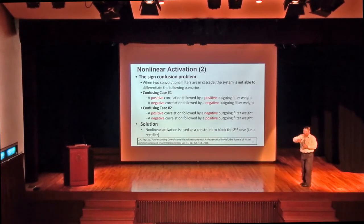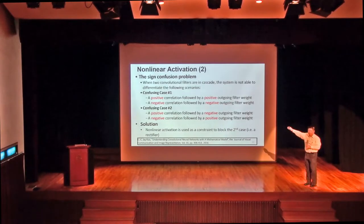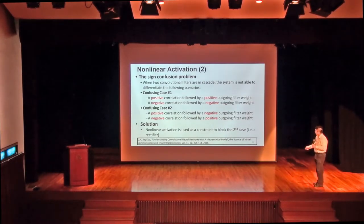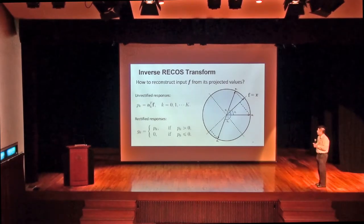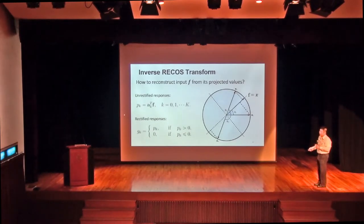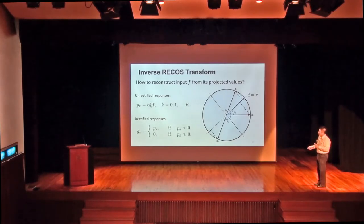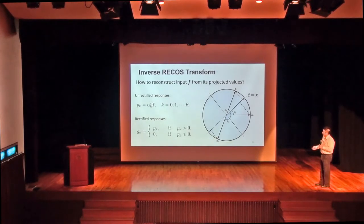Now, another issue is why you do subspace approximation — it comes from the rectifier transform, which is a rectified correlation on the sphere. For the inverse transform: given a patch, find the projection P_K. The inverse means: given the anchor vectors A_K (the dictionary) and the projections, reconstruct the signal f. You write f as a linear combination of the basis vectors. If you look at this long enough, you get several intuitions: first, you want orthogonal basis, which makes inversion easy.